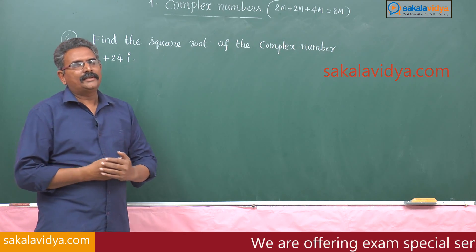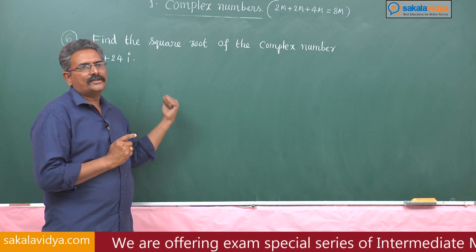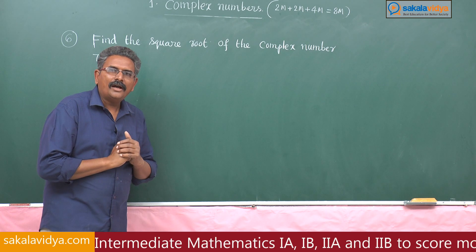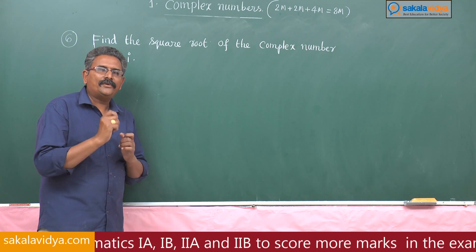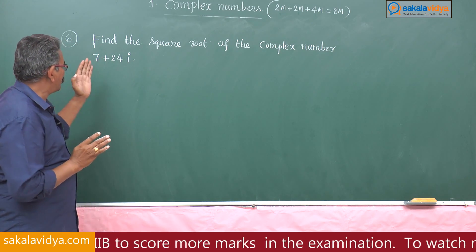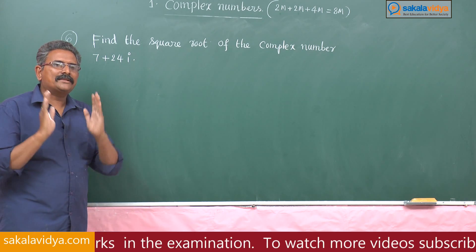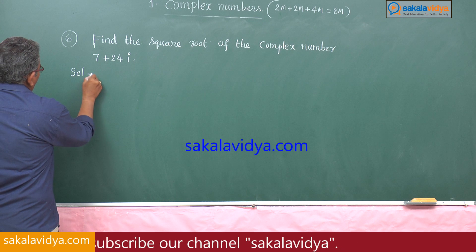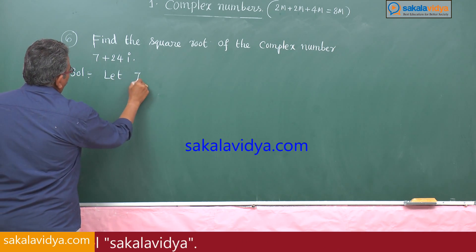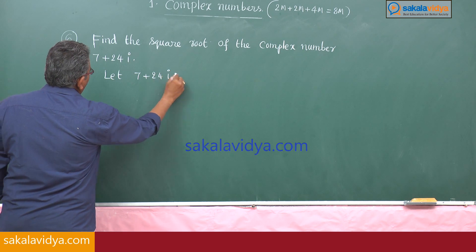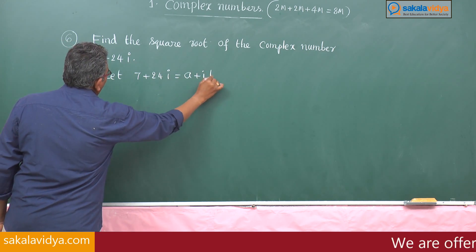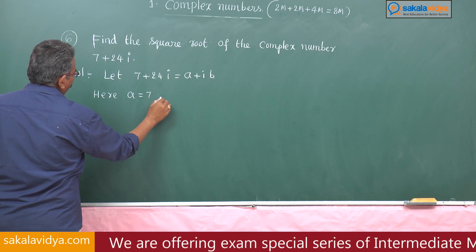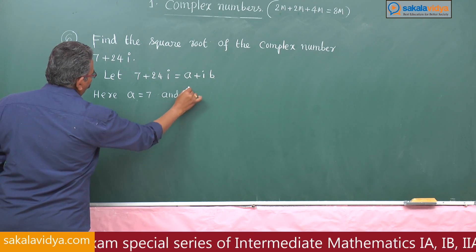The first step is to find the modulus r. The second step is to apply the formula. Before going to that, let 7 plus 24i equal to a plus ib form, where a equals 7 and b equals 24.